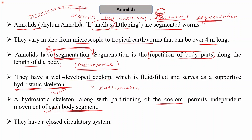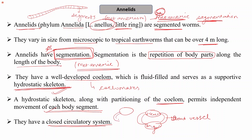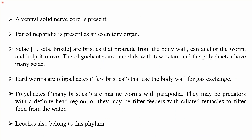Annelids have a closed circulatory system, where the blood is pumped with the help of the heart and carried through blood vessels into different organs — unlike the open circulatory system, where blood is released into the body cavity and bathes the organs. Their blood is red in color due to the presence of pigments like hemoglobin, though unlike in humans, the hemoglobin is dissolved in the plasma rather than present in RBCs.